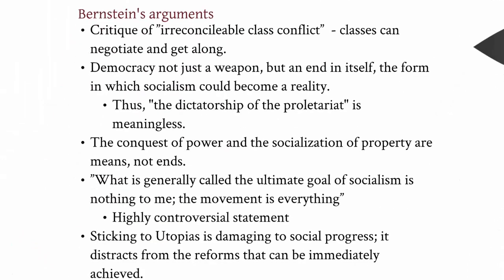His arguments can be summarized in five points. First, he critiqued the idea of class conflict as irreconcilable — in other words, he was saying that the working class and the bourgeoisie could actually negotiate and get along in some sense. Not necessarily always agreeing on everything, and certainly not transforming the inherent nature of their positions within the capitalist system, but there was a sense that they could meet at the negotiation table and work something out.